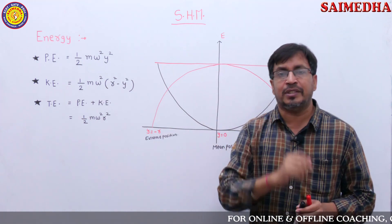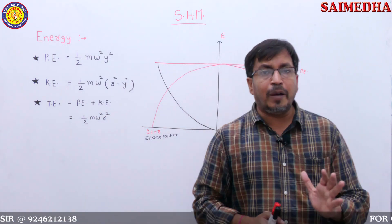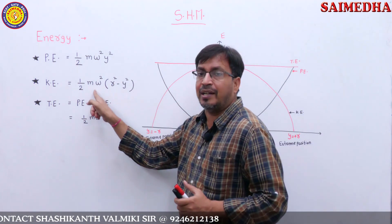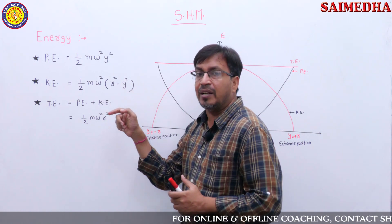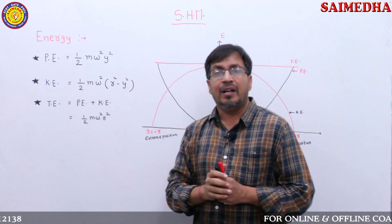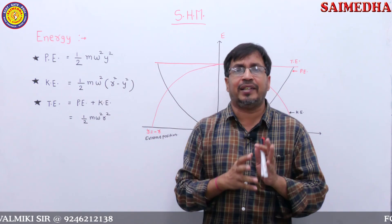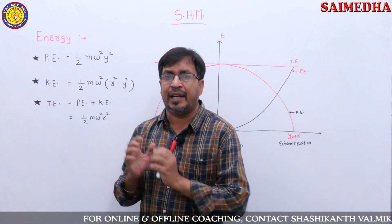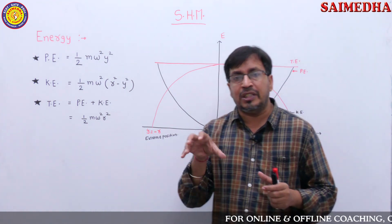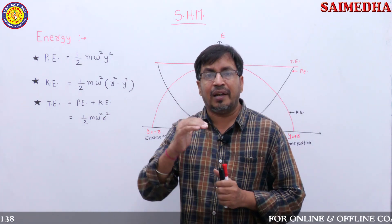The second type of question involves the particle at extreme position, where the condition is y equals r. Substituting y equals r into the kinetic energy formula — half m omega squared (r squared minus y squared) — kinetic energy becomes 0. Potential energy becomes half m omega squared r squared, which equals total energy. Questions asked include: at mean position what is PE and KE? At extreme position what is PE and KE? Or at what position does total energy equal potential energy, or equal kinetic energy? These are level one questions.